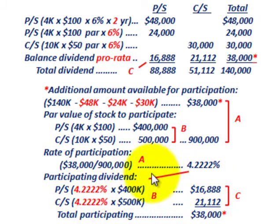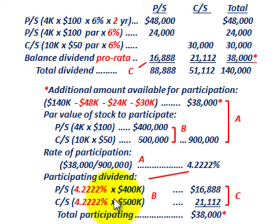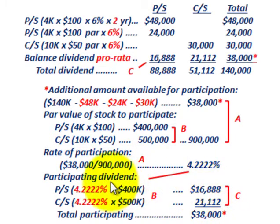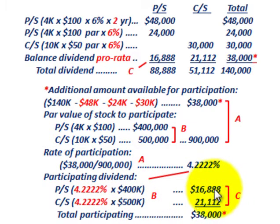For common stock, the same thing — take the rate of participation percentage times the total par value for common stock, $500,000, which gives an allocation of $21,112. So we've divided the participating dividend between preferred stock at $16,888 and common stock at $21,112, totaling $38,000.